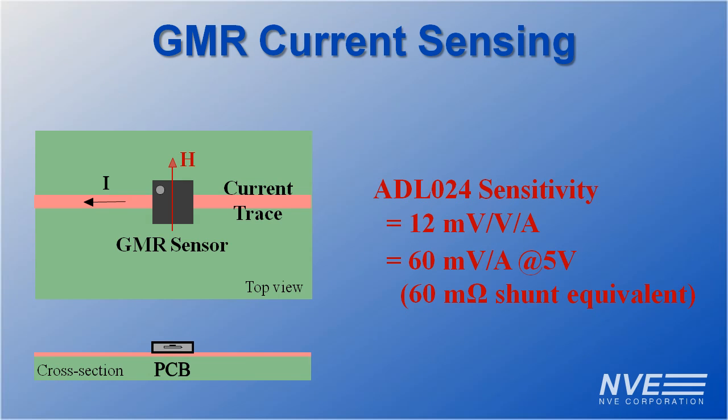Typical sensor sensitivity is a remarkable 12 millivolts per volt per amp, which is the equivalent of a 60 milliohm shunt at 5 volts but without the resistance losses.